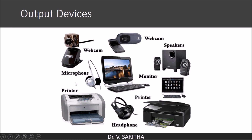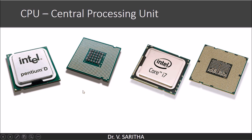The next functional component is output devices. We are all familiar with output devices such as webcam, microphone, printer, headphones, monitors, and speakers. CPUs come in various sizes, companies, and technologies — for example, this central processing unit from Intel is a Core i7. So we have now seen all the functional components of the computer: input devices, memory, output devices, and CPU. Thank you.